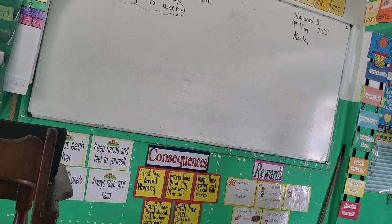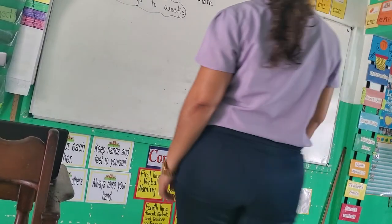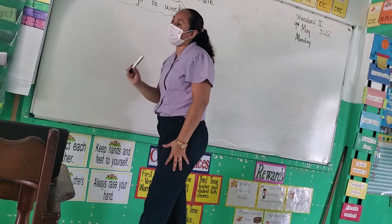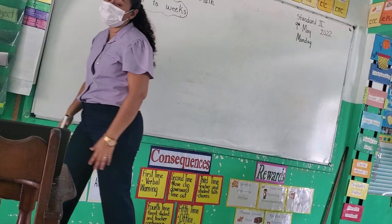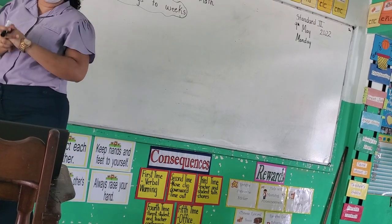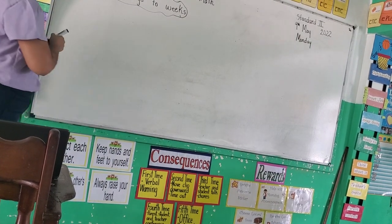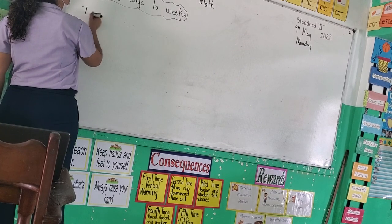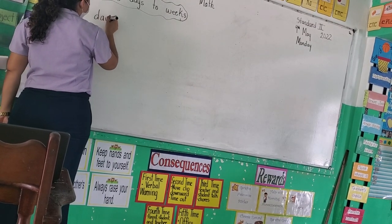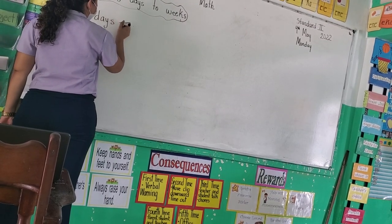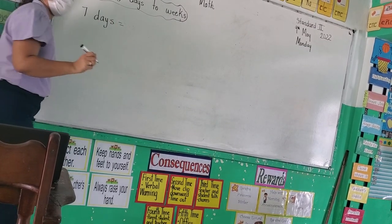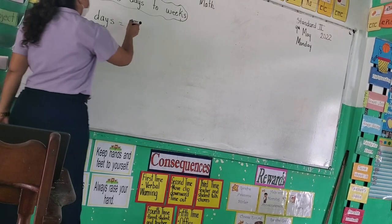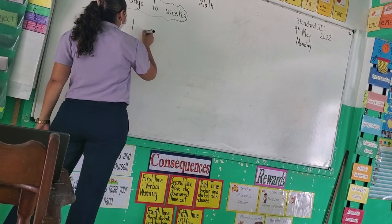Our topic for today is converting days to weeks using the subtraction method. We already know that seven days equals one week.